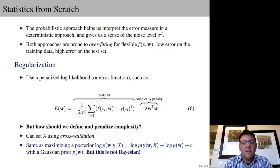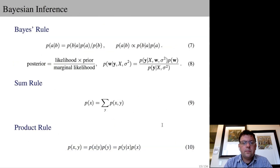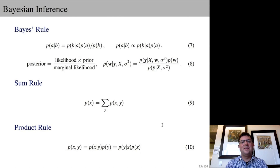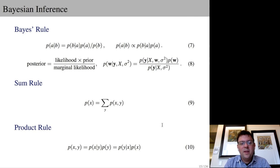We can gain some interpretability by thinking about maximizing a log posterior, which equals a log likelihood plus a log prior, and the log prior can be interpreted as a regularizer. But this really isn't a Bayesian approach. There isn't much you need to know to use a Bayesian approach. We have Bayes' rule: a posterior is proportional to a likelihood times a prior. The normalization constant is the marginal likelihood. The sum rule says P(X) equals the sum over the joint distribution P(X,Y) summing out Y. The product rule says the joint distribution over X and Y equals P(X|Y)·P(Y) or P(Y|X)·P(X), and we can derive Bayes' rule from the product rule.